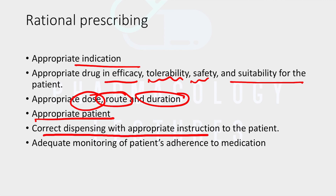There should be correct dispensing and appropriate instructions. Many times prescribers don't take time to make patients understand how to use medicines. For example, meter dose inhalers — patients don't know how to use them and that is why they become ineffective. The doctor should spare time to make patients understand specific drug formulations, and there should be adequate monitoring of whether the patient is taking the medicine. The doctor needs to check adherence and compliance.